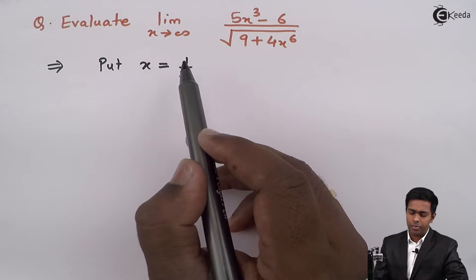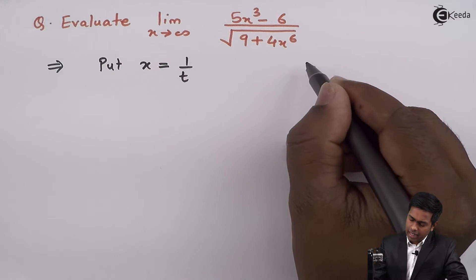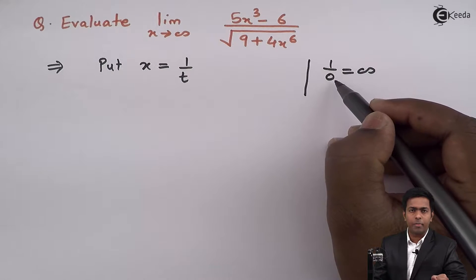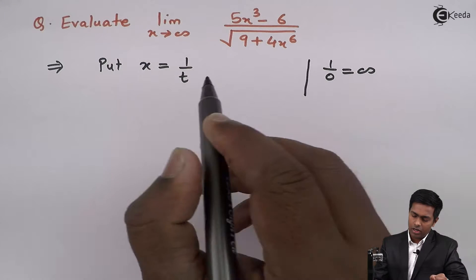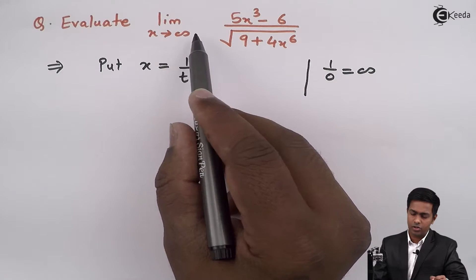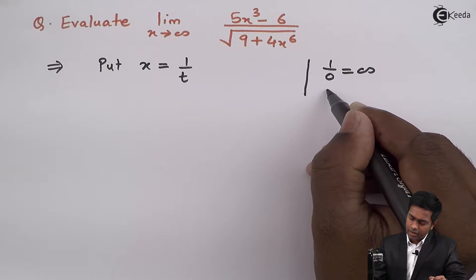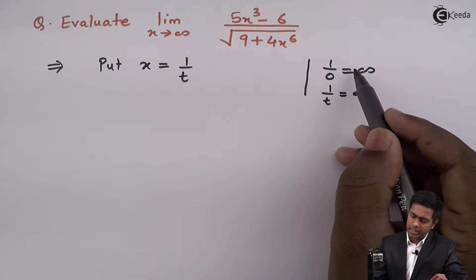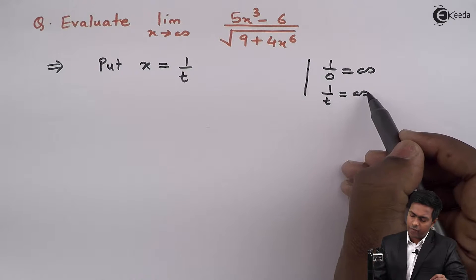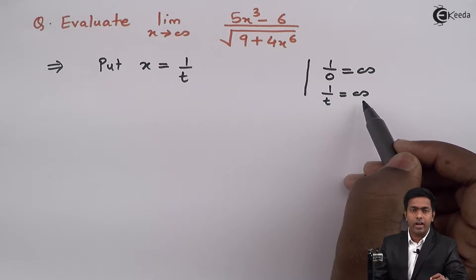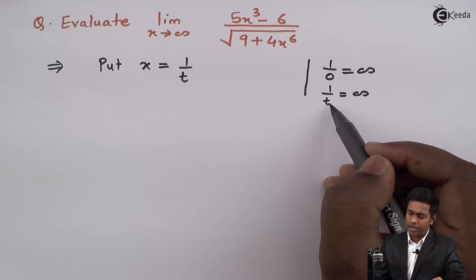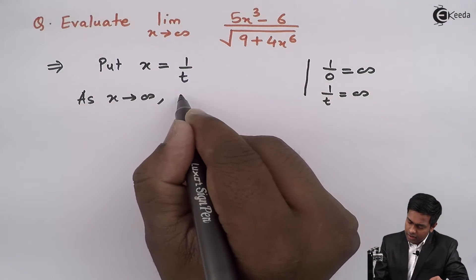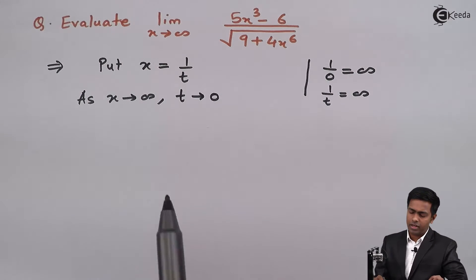We know that 1 upon 0 is infinity, so whenever we have 0 in the denominator we get infinity. Here x tends to infinity, so substituting gives 1 upon t equals infinity, which is possible if and only if t equals 0. Therefore, as x tends to infinity, t tends to 0. So we have the limit for t.